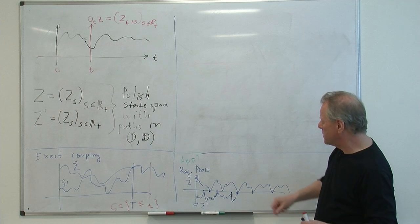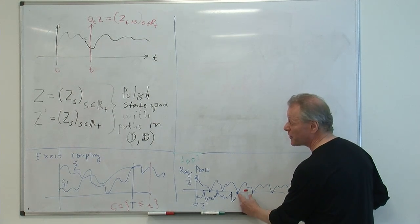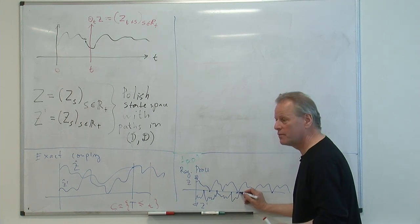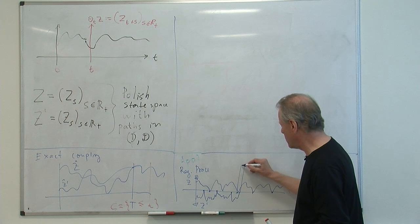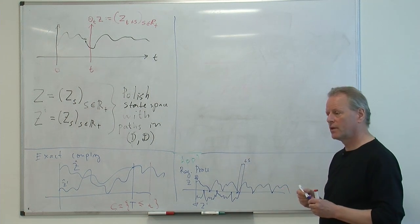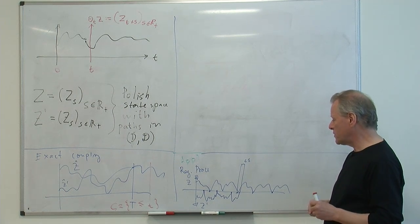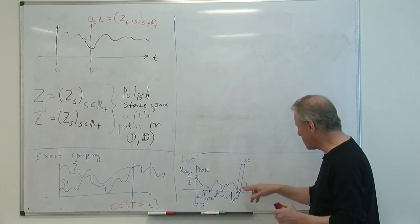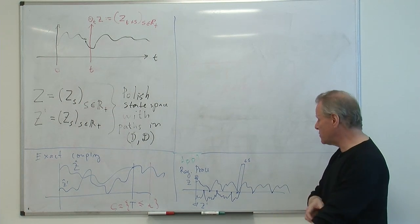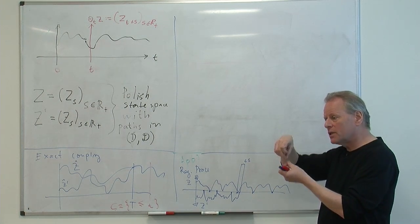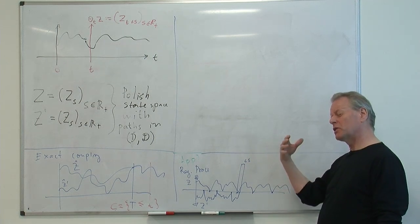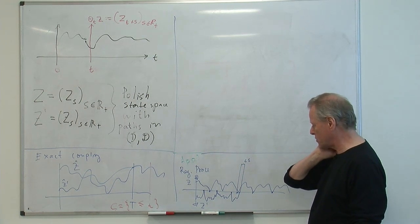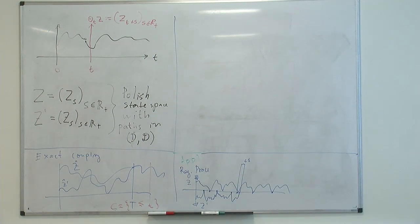But in the finite mean cycle length — positive recurrent — case, it can be proved that they actually come epsilon close: this interval here is less than or equal to epsilon. You can prove this happens for regenerative processes with finite mean. Non-lattice — that's the interesting thing. In the continuous case, you can actually make them meet, but if you have cycle length concentrated on the rationals, you wouldn't be able to do that. But you can make them go epsilon close. So then you have almost coupling, or epsilon coupling.